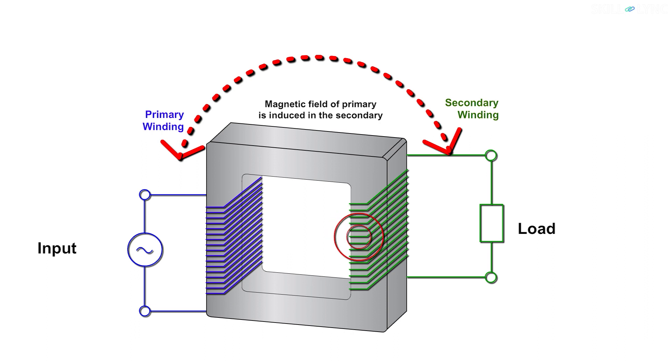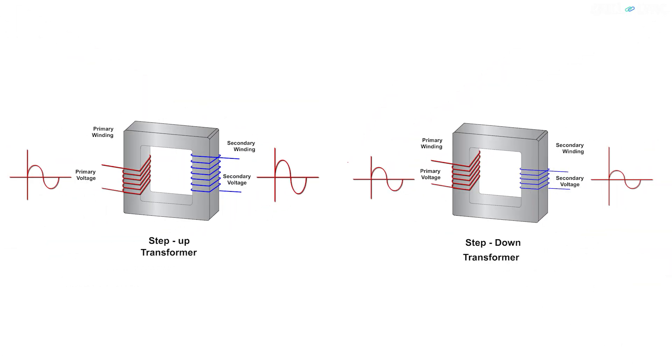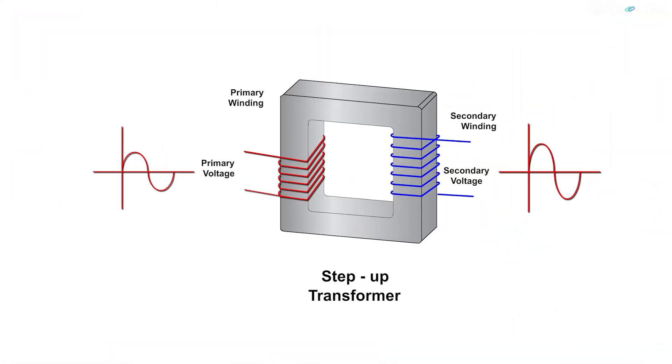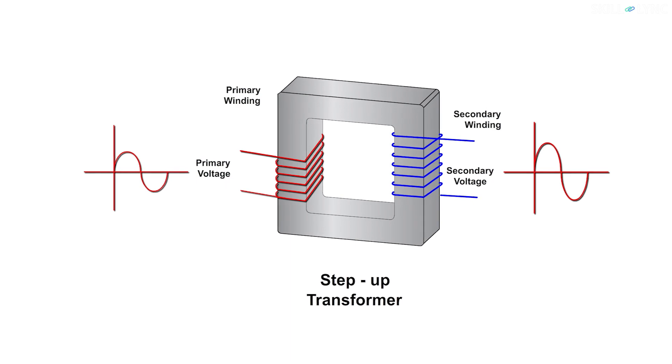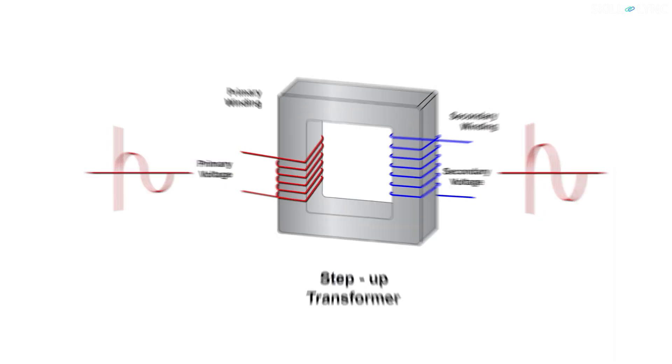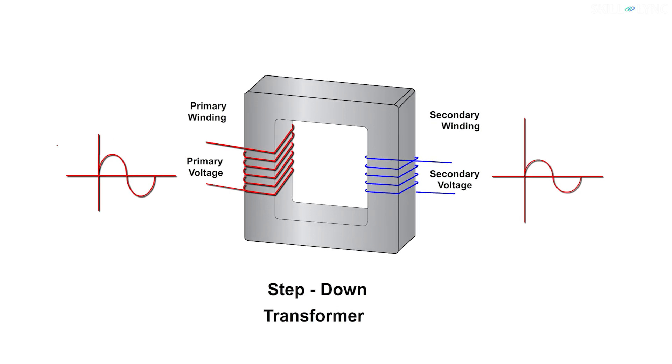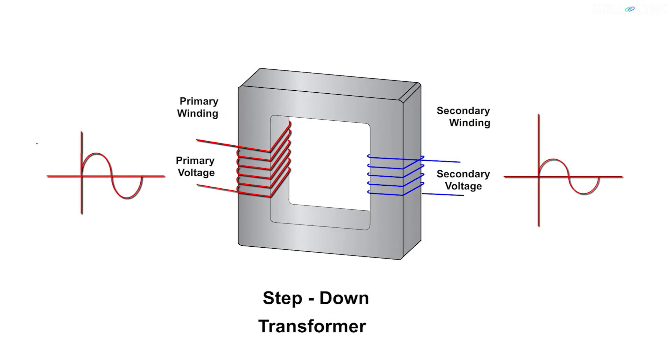As the secondary winding comes in contact with the magnetic field of the primary winding, an induced EMF is developed. Depending on the number of turns in the secondary winding, they are categorized as step-up transformers or step-down transformers. A step-up transformer has a higher number of coils in secondary winding and will increase the voltage, while a step-down transformer has a lesser number of coils in the secondary winding and will decrease the voltage.